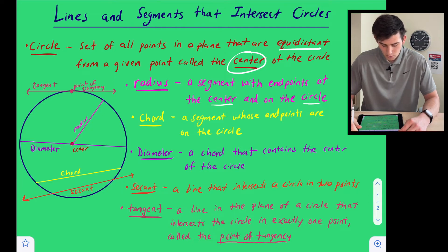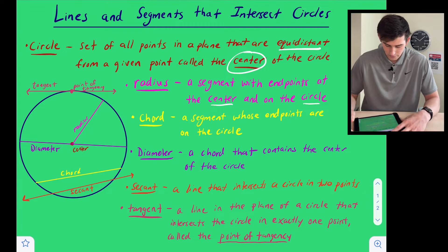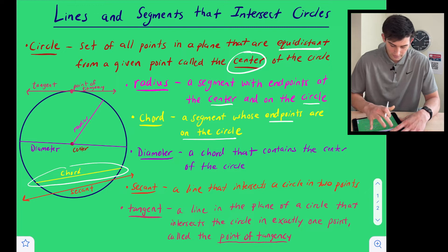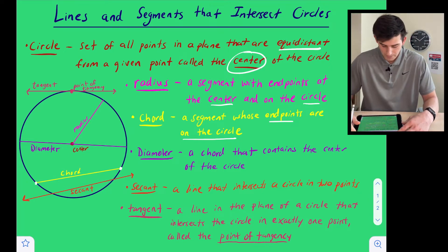Then we're going to talk about a chord. A chord is a segment whose endpoints are on the circle — so both endpoints are on the circle. Here's our chord right there, and we can see that both of its endpoints lie on the circle.